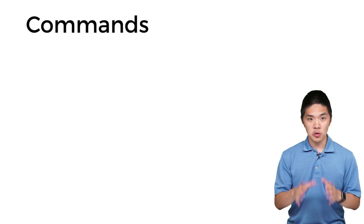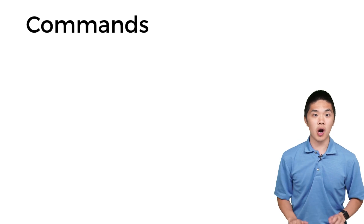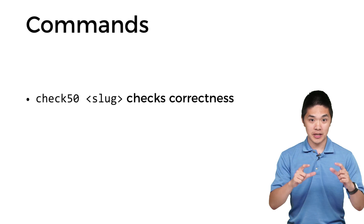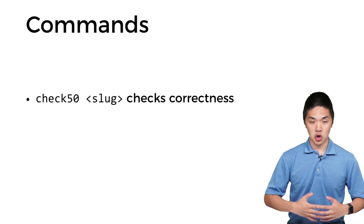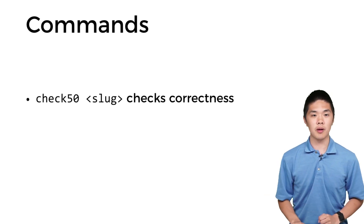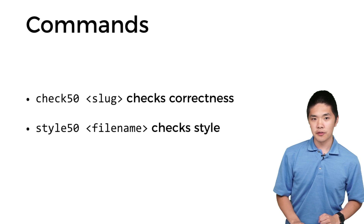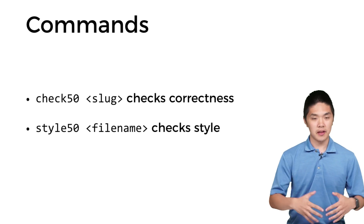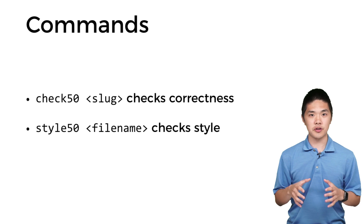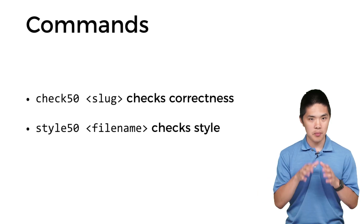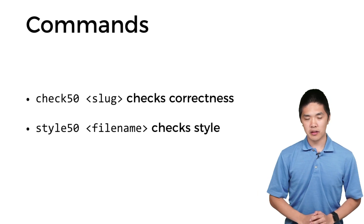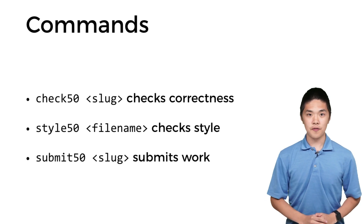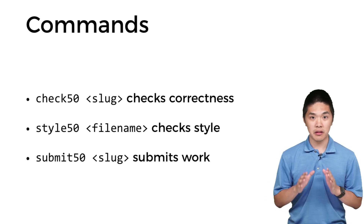Let's take a look at what commands students might run to interact with problems in your course. They can run Check50 followed by a particular slug name to check the correctness of their code. They're also able to run Style50 followed by a file name to check code style and get suggestions for improvement. And when students are done working on their code, they can submit it by running Submit50 followed by a slug name.